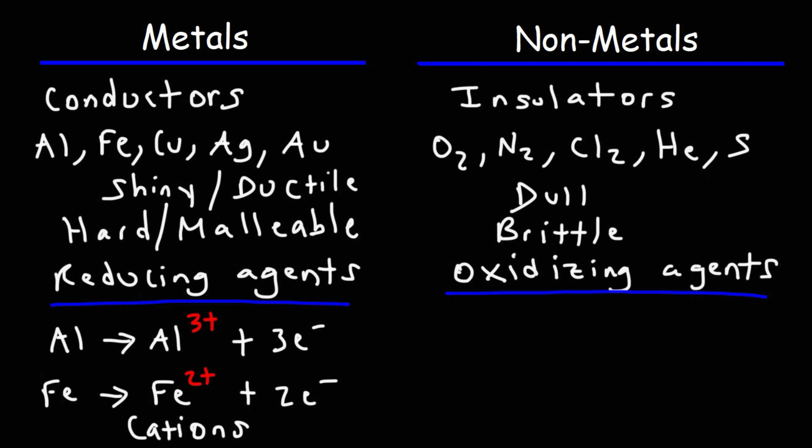Non-metals are the opposite. They like to take electrons. Chlorine gas is an oxidizing agent. When it takes two electrons, it's going to form an ion with a negative charge. And, the same is true for oxygen. But, oxygen will form ions with a negative 2 or 2 minus charge. Negatively charged ions are known as anions. So, metals tend to form cations. Non-metals tend to form anions.